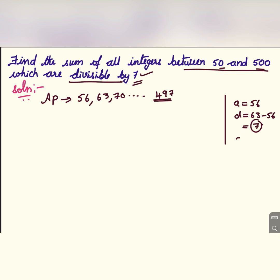Now Sn we need to find out. Sn is equal to n by 2 into a plus l because we have this formula. I am using this formula because we are already having An or the last term which is equal to 497.